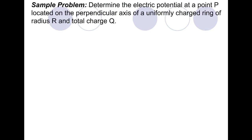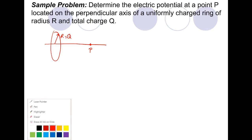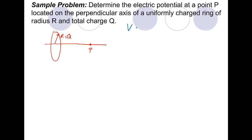Here's the first example. We want the electric potential at a point P located on the perpendicular axis of a uniformly charged ring of radius R and total charge Q. We did this for the electric field and had to take vectors into account, but the great thing about doing potential is that we don't have to. We just say that V is the integral of dV, which is the integral of k·dq over r. I think of a tiny element which contributes dV due to charge dq. I'm not drawing any vectors at point P because it's a scalar.